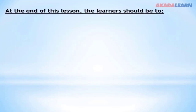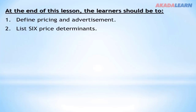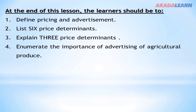At the end of this lesson, the learners should be able to: define pricing and advertisement, list six price determinants, explain three price determinants, and enumerate the importance of advertising of agricultural produce.